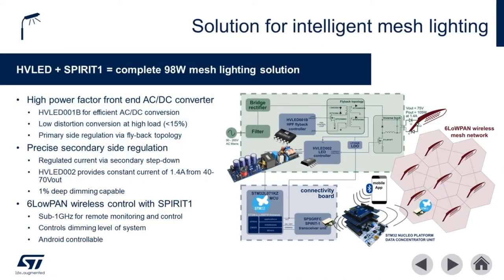Our first example solution illustrates a possible implementation for a 98 watt offline LED lighting node for outdoor applications. This application example is comprised of three primary blocks.